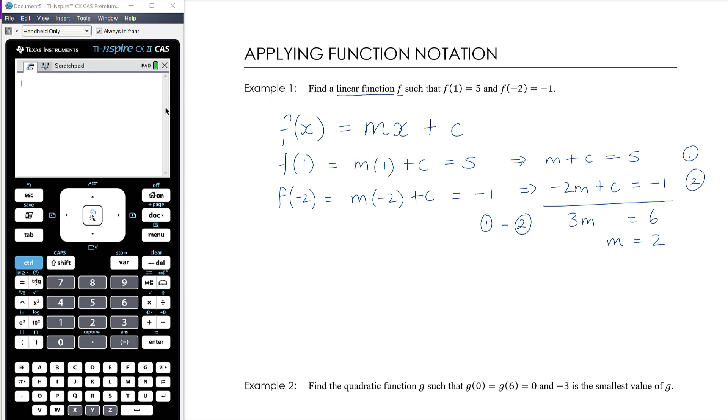And so m equals 6 divided by 3, which is 2. We can substitute back into either equation to find the value of c. I'm going to go back into equation 1, which is the simpler equation. We know that m plus c equals 5 and m is 2, so therefore c must equal 3. Therefore our function f(x) is equal to 2x plus 3.